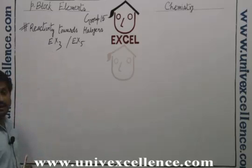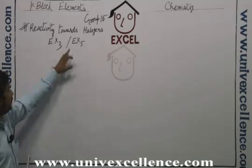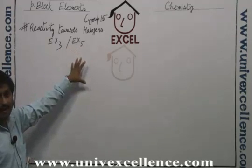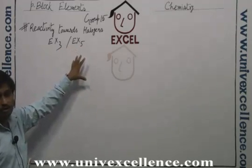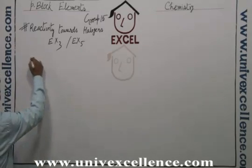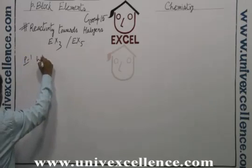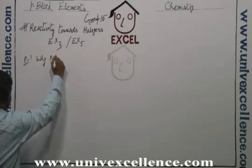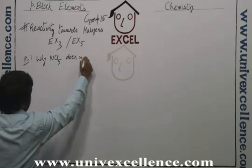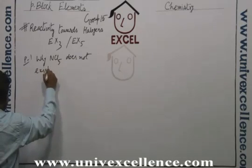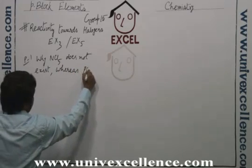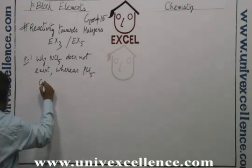The most important characteristic is that nitrogen cannot form EX5 due to the unavailability of d orbitals in its electronic configuration. The most important question is: why does NCl5 not exist, whereas PCl5 can be obtained?